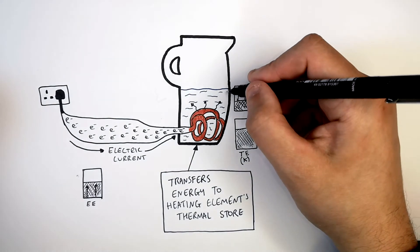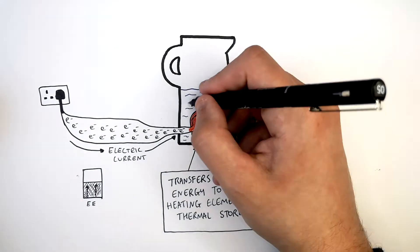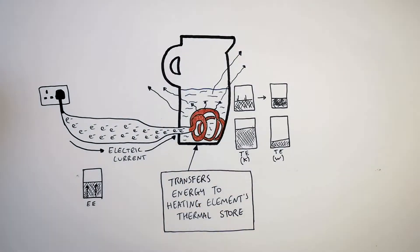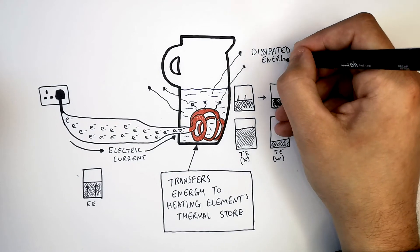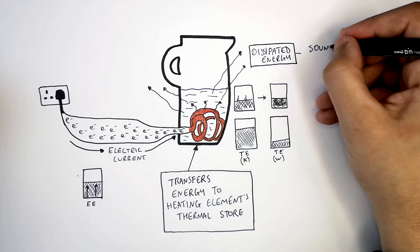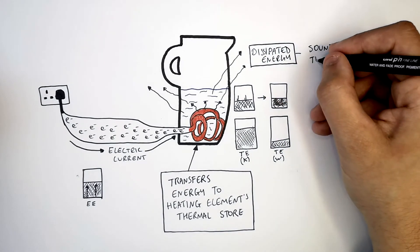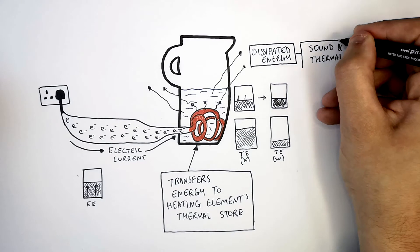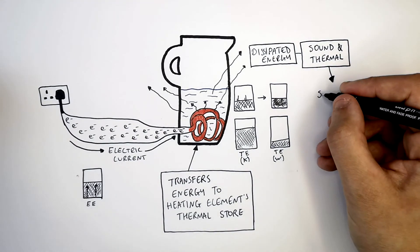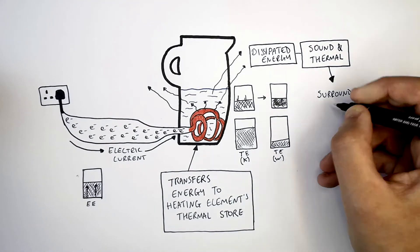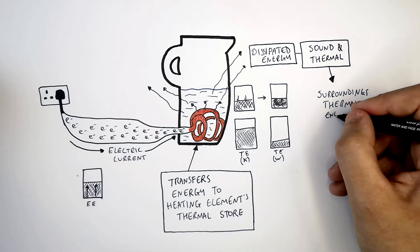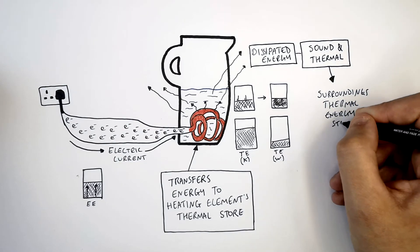There's also going to be an energy transfer to the surroundings. We call this dissipated energy, or wasted energy, whereby sound and thermal energy is going to be transferred from the thermal energy store of the kettle and the water to the thermal energy store of the air particles surrounding it.